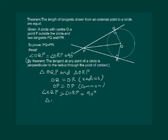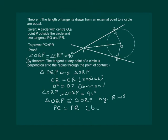We can say that triangle OQP is congruent to triangle ORP by RHS. And hence PQ equal to PR by CPCT.